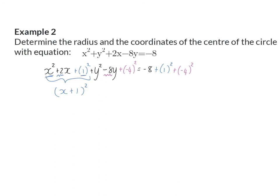My second three terms will also factorize into a bracket squared, and that will be y minus 4.